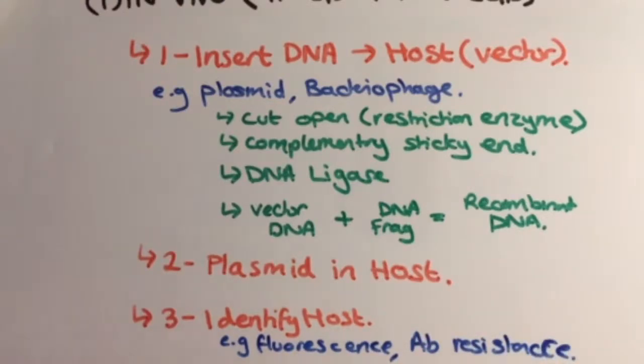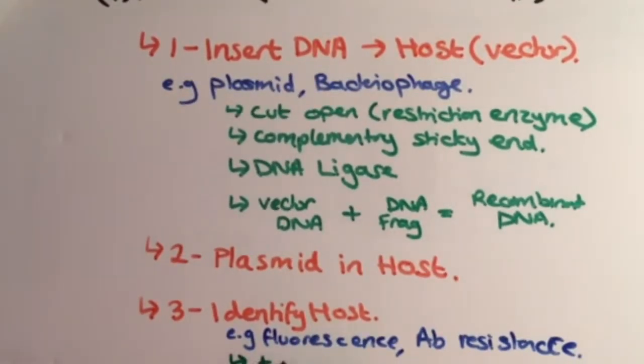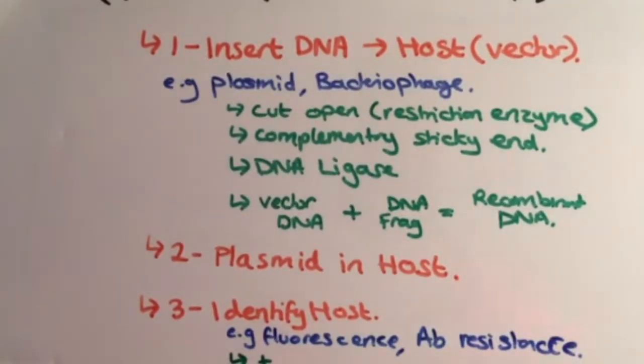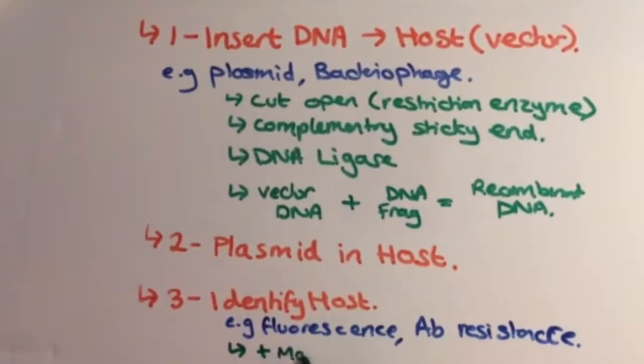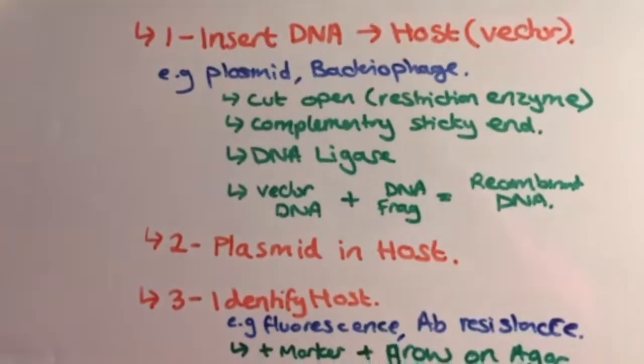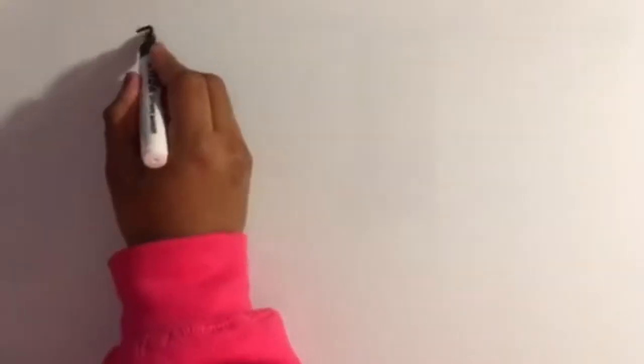Next, identification occurs when fluorescence or antibiotic resistance is determined. This happens when the host and a marker gene such as fluorescence is grown together on an agar plate and then detected via UV light or some sort of resistance.